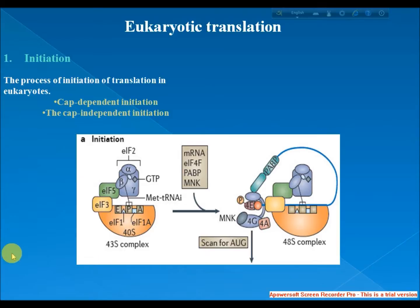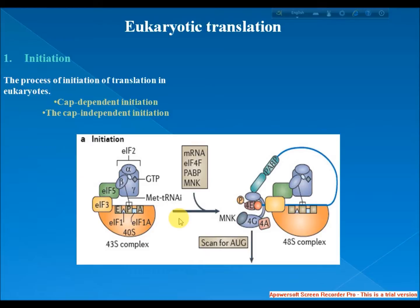The met-charged initiator tRNA is brought to the P-site of the small ribosomal subunit by eukaryotic initiation factor 2, eIF2. It hydrolyzes GTP and signals the dissociation of several factors from the small ribosomal subunit, resulting in the association of the large 60S subunit. The complete ribosomal subunit then commences translation elongation, during which the sequence between the start and stop codon is translated from mRNA into an amino acid sequence, synthesizing a protein.